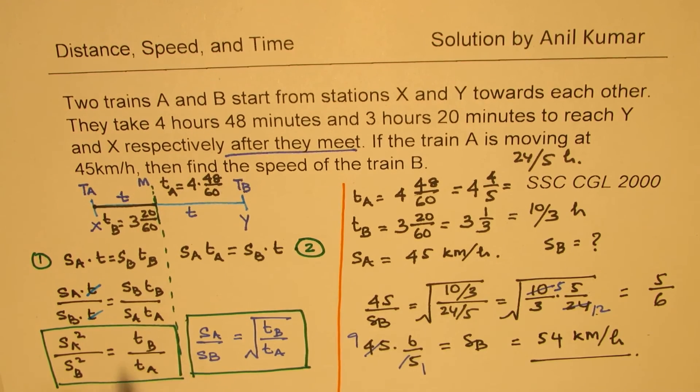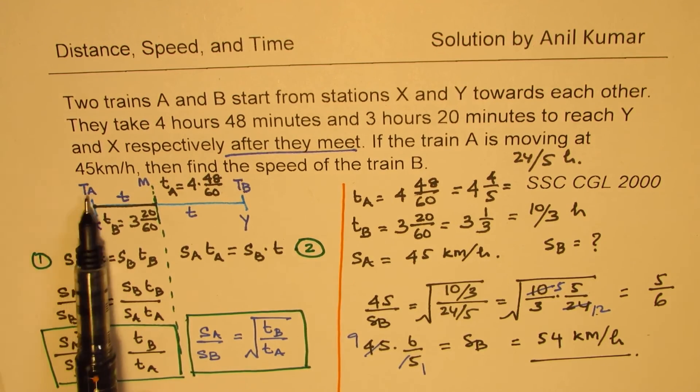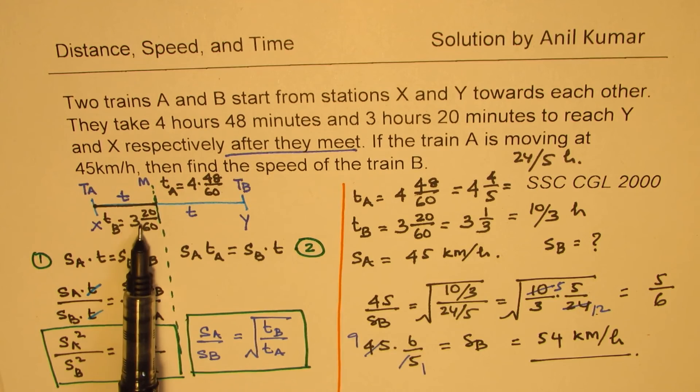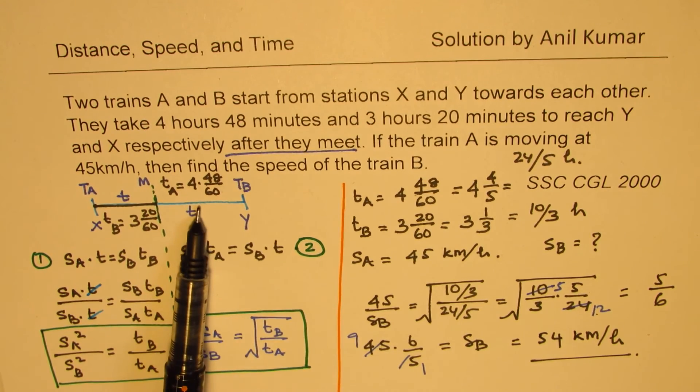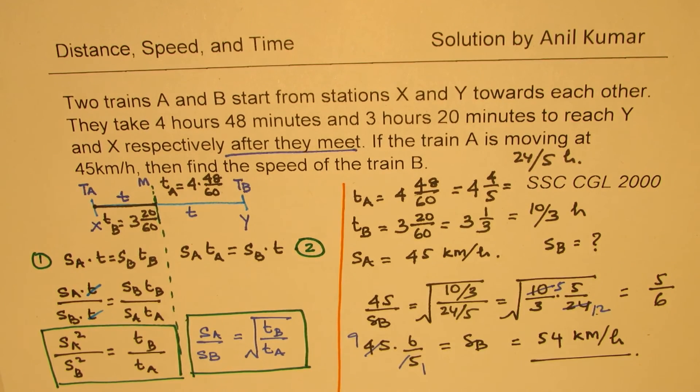It's very important to understand how we derived this formula. This distance is being traveled by both trains. Train A takes T time which is common, and train B takes 3 and 1 over 3 hours. Since the distance is same, we equated and got the first equation. Same logic for the second part. Dividing one by the other, we got rid of this common time T, and we got a relation between the speeds of the train and time taken to cover the rest of the journey. So whenever you have something like this, use the formula and get the answer. Feel free to write a comment, share your views, and if you like and subscribe to my videos, that'd be great. Thanks for your time and all the best.